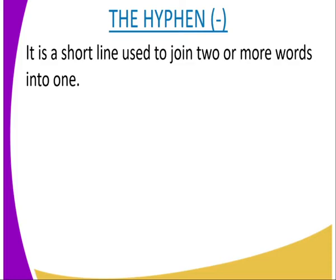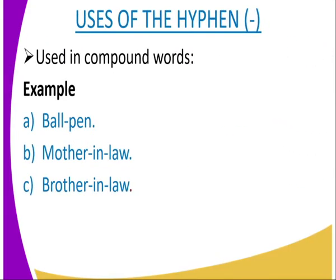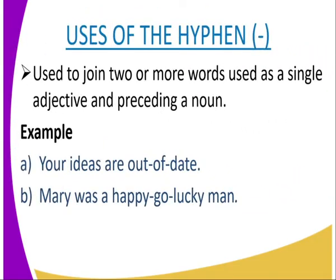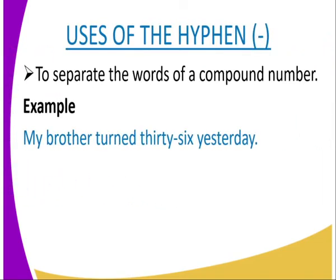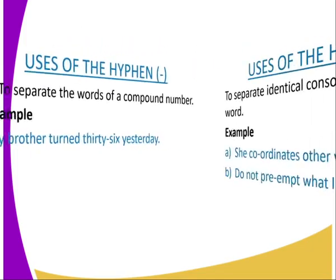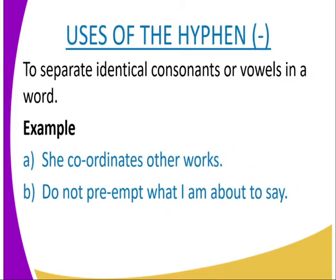We can look at the hyphen as another punctuation mark. It is a short line used to join two or more words into one. Hyphen is used in compound words, such as ball-pen, mother-in-law, brother-in-law. It is also used to join two or more words used as a single adjective preceding a noun — example: Mary was a happy-go-lucky person. The hyphen is used to separate the words of a compound number — example: my brother turned 36 yesterday. Another use is to separate identical consonants or vowels in a word — example: she co-ordinates other work, or do not pre-empt what I'm about to say.